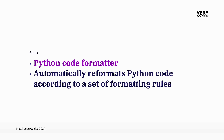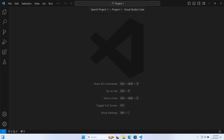Before we install Black, a short introduction. Black is a Python code formatter that will automatically reformat Python code according to a set of formatting rules. When we press save, Black will automatically run, take a look at our code, and format it accordingly. This will ensure consistent, readable code style and promote code quality.